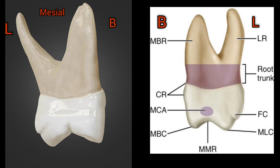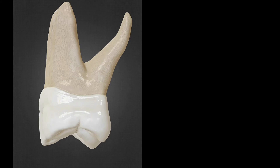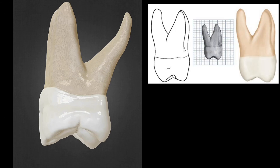The lingual margin is convex throughout, with the height of contour at the middle one-third. The cervical line is shallow and irregular. The fifth cusp — the cusp of Carabelli — is visible from the mesial side. The mesiobuccal root is broad, while the lingual root is narrow and long.